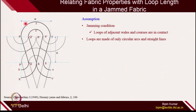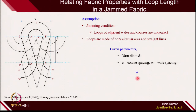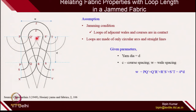For wales spacing W, if you move from P to T, that distance equals W. Moving from P to Q dash, Q dash to R dash, R dash to S dash, and S dash to T — there are 4 distances: PQ dash, Q dash R dash, R dash S dash, and S dash T. Each of these distances equals the yarn diameter D, because you know how thick the yarn is. PQ is nothing but the yarn diameter, Q dash R dash is again one yarn diameter. So all these distances are equal, and wales spacing automatically becomes 4D.